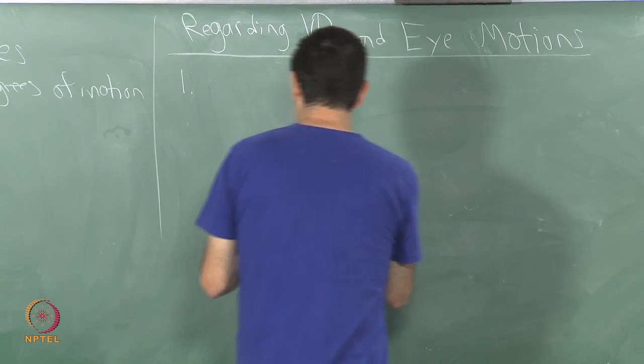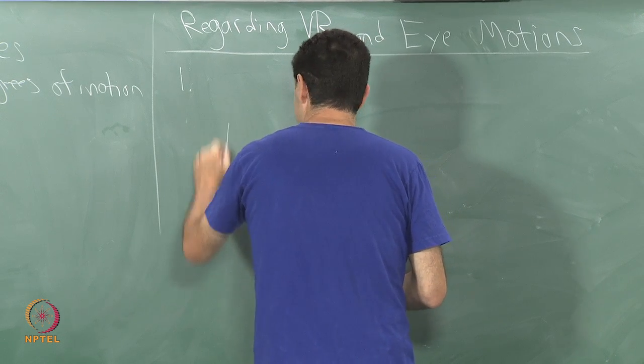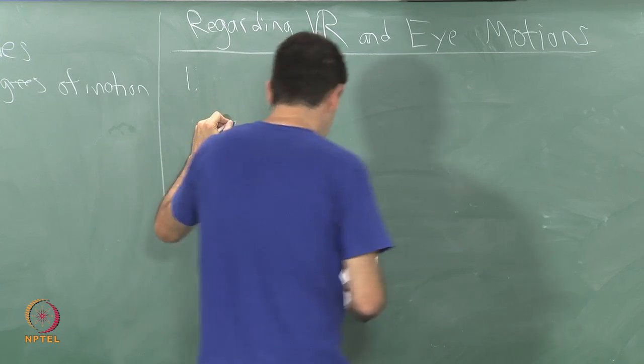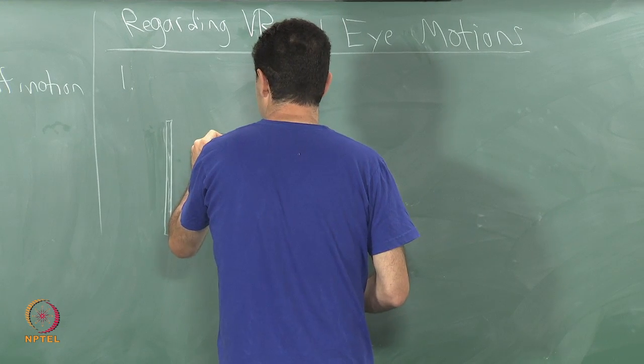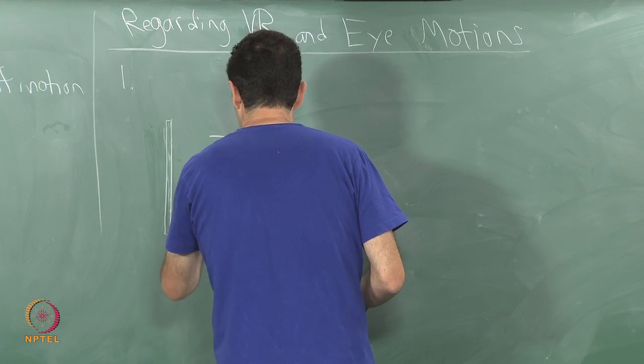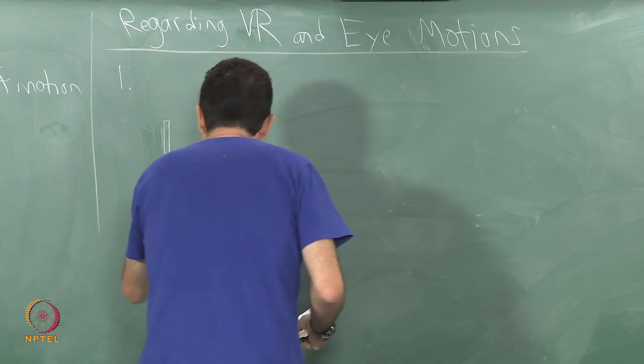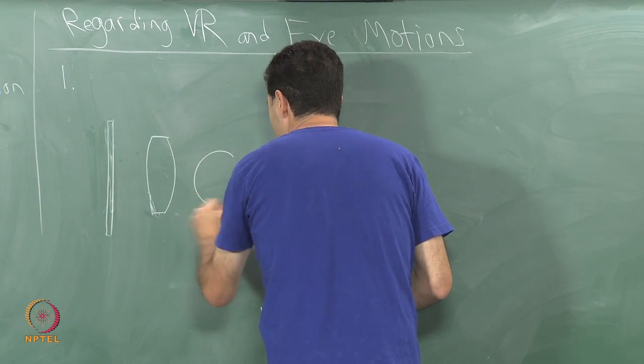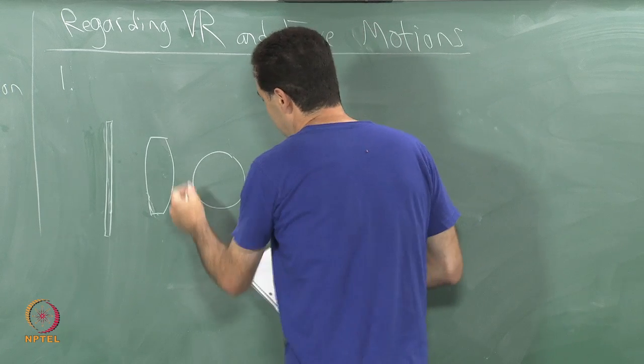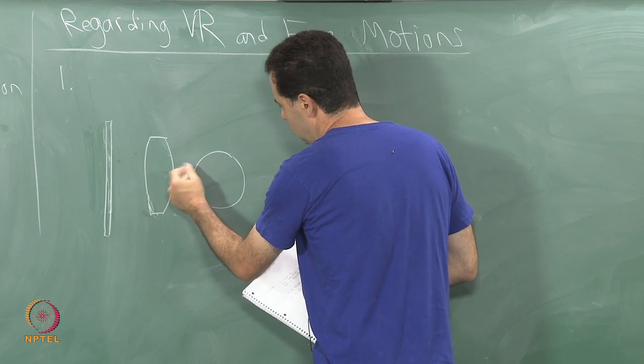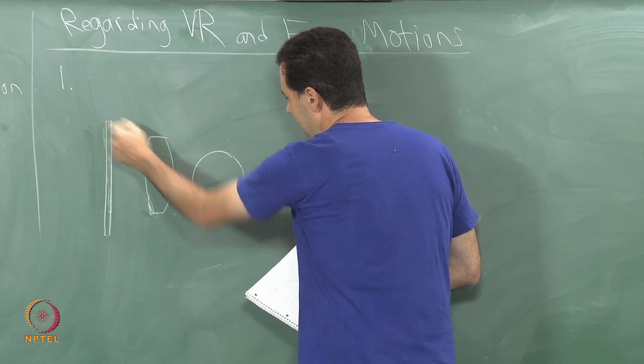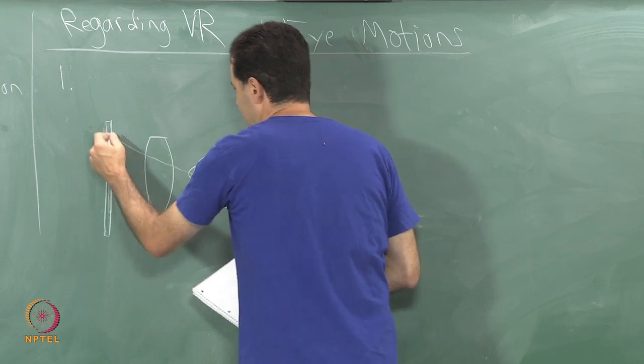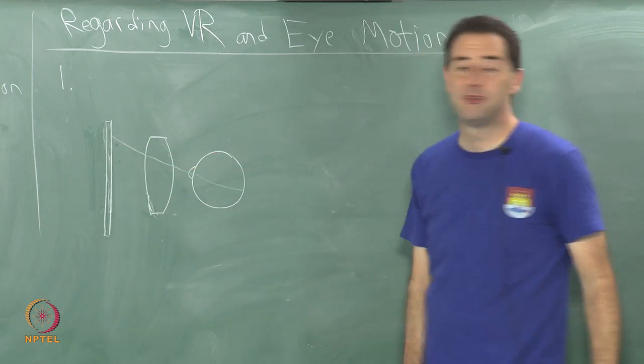Number one: I have the screen like I drew before, I have the lens in front of that, I have the eye before that and the pupil. Let me just draw the cornea part here, maybe aimed at the top part. We are looking at some pixels that are on the top part of the screen here.